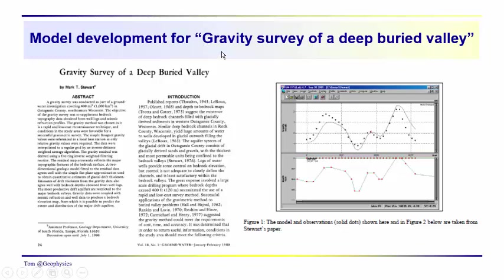We're going to take a look at using a computer program to model the gravity anomaly that we see in order to relate it back to the geology. I'm going to use a model that comes from Mark Stewart's paper on the gravity over a buried valley. These are glacial valleys here, and we haven't colored in the lithology as yet.